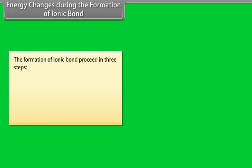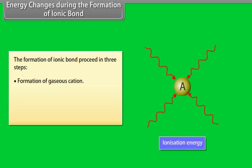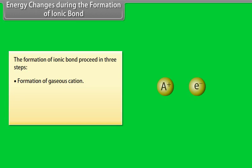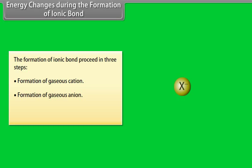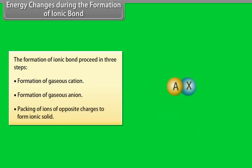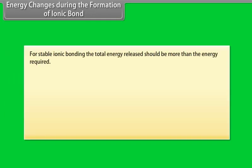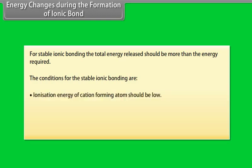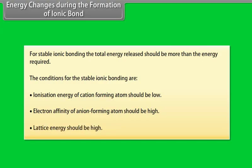Energy changes during the formation of ionic bond proceed in three steps. Step 1: Formation of gaseous cation — the energy required is called ionization energy. Step 2: Formation of gaseous anion — the energy released is called electron affinity. Step 3: Packing of ions of opposite charges to form ionic solid — the energy released is called lattice energy. For stable ionic bonding, the total energy released should be more than the energy required.